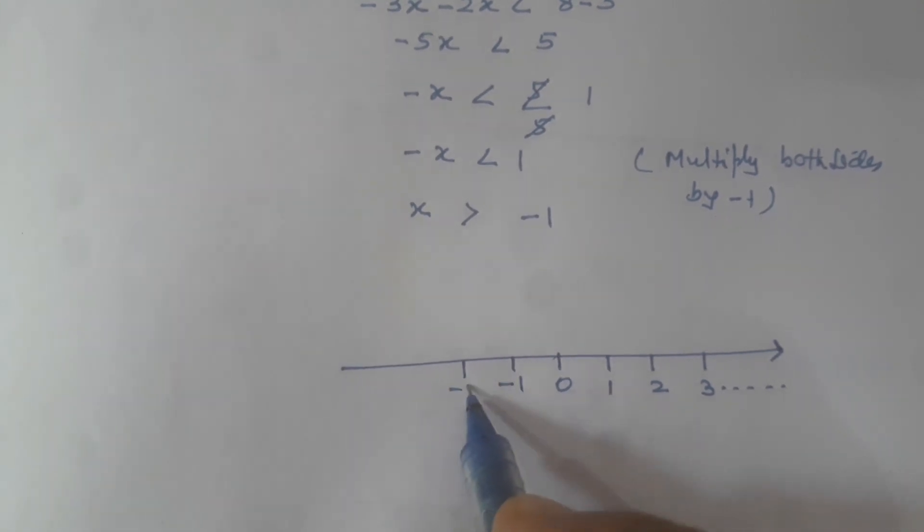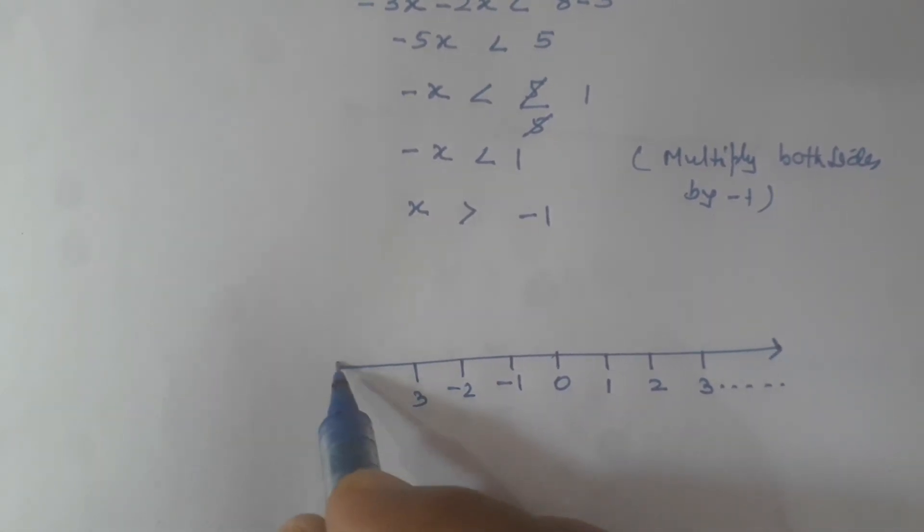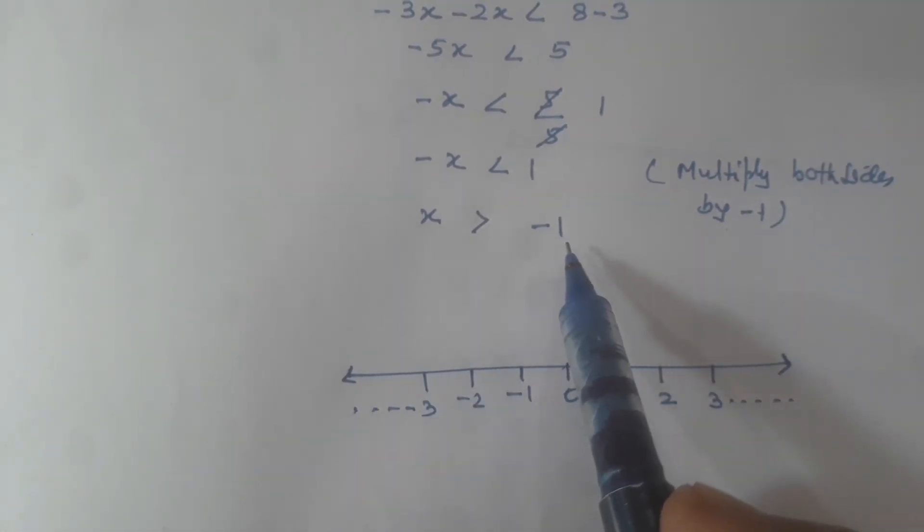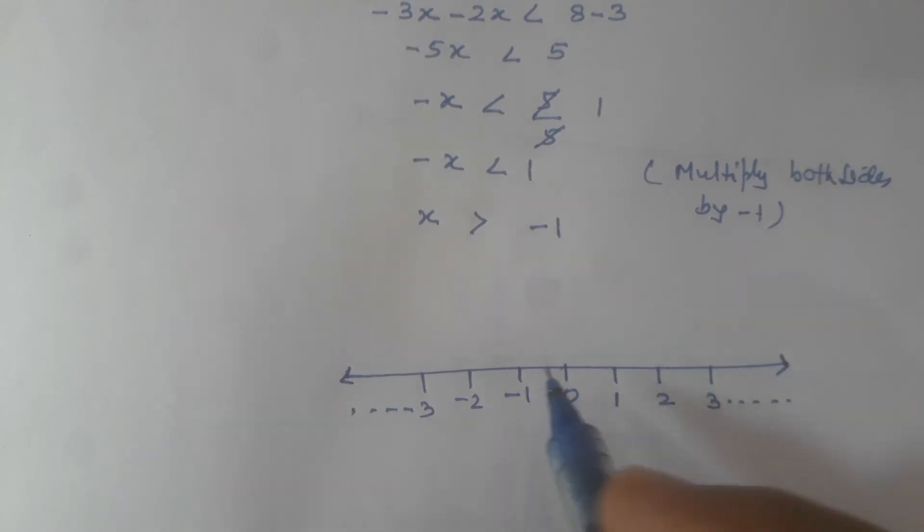As the value of x is greater than minus 1, minus 1 itself is not included. So at minus 1 we put a blank circle. If minus 1 were included in the value of x, we would use a closed or darkened circle.